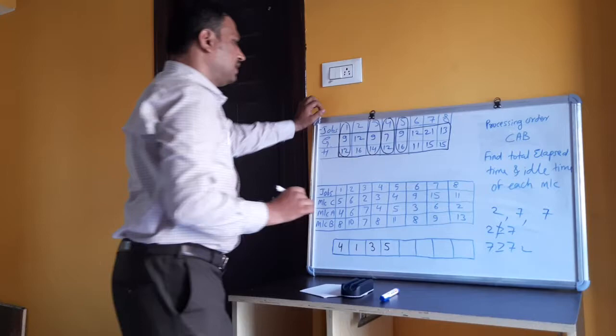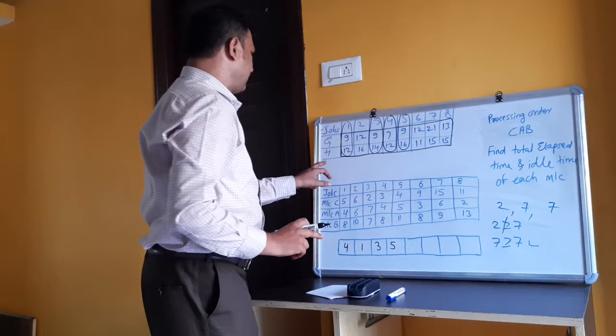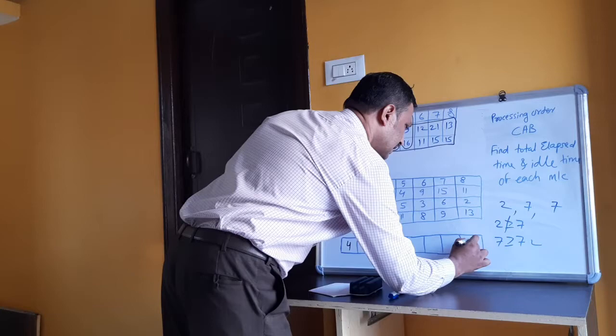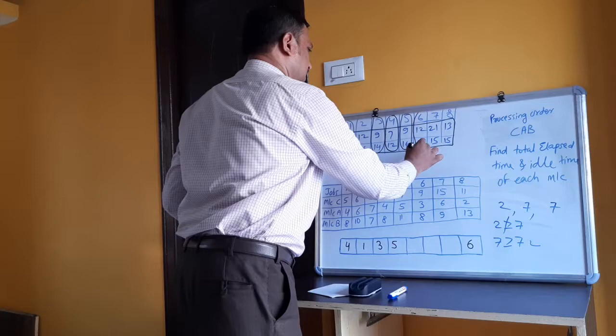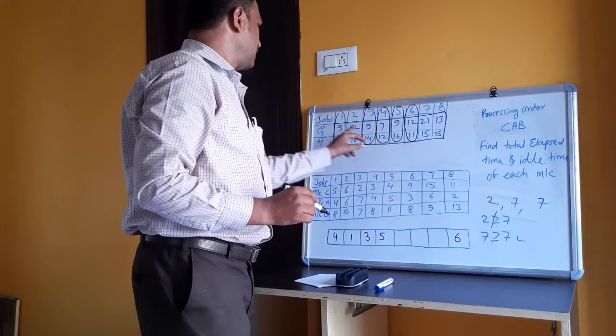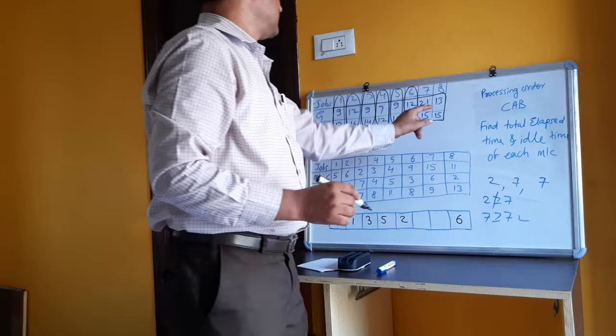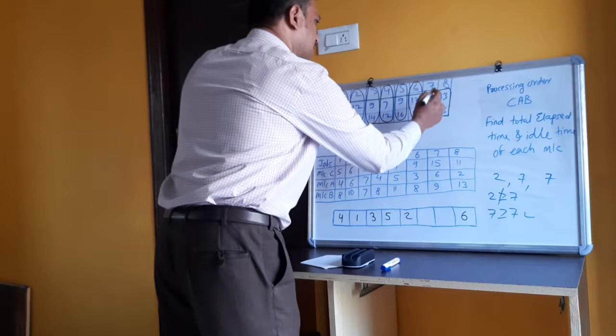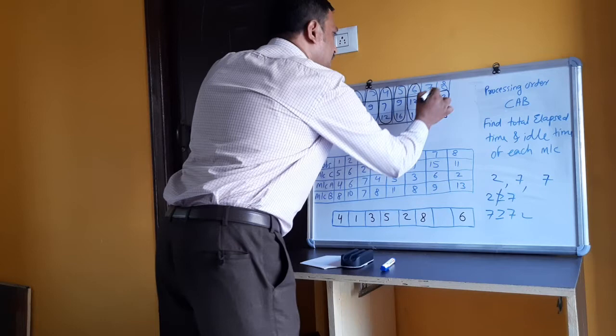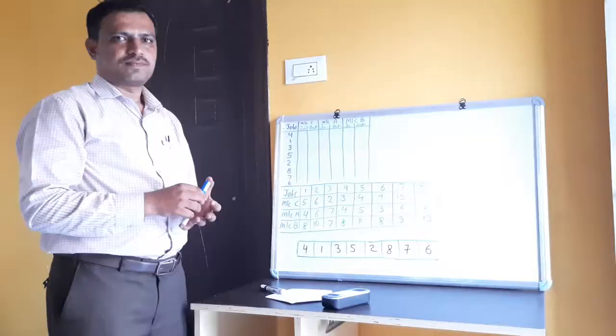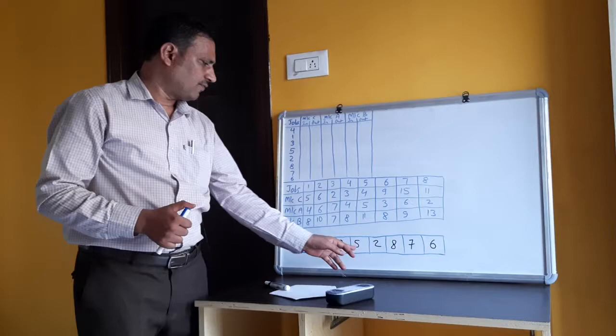In the remaining jobs, 11 is the least processing time, and it is on machine H, so job 6 goes to the right side — at the end. Next, 12 is the least remaining, on machine G, so job 2 is placed next on the left. Then 13 is the least, on machine G for job 8, so job 8 follows. Finally job 7 remains. The final sequence is: 4, 1, 3, 5, 2, 8, 7, 6.